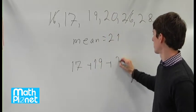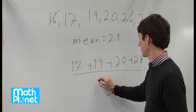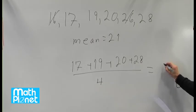17 plus 19 plus 20 plus 28 all over 4. We can calculate that out to be 21 as well.